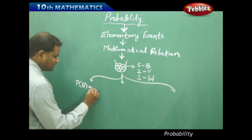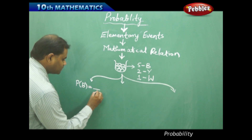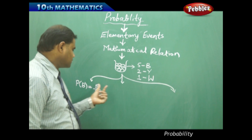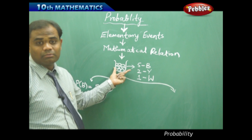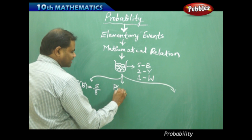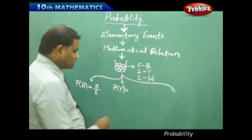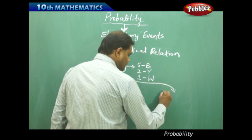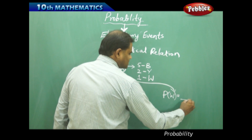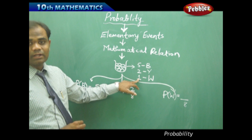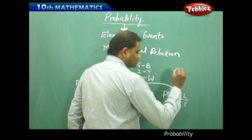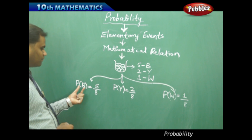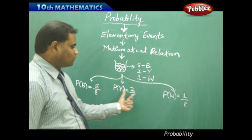The probability of picking a blue ball is five over eight, since there are five blue balls out of eight total. Similarly, the probability of picking a yellow ball is two over eight, as there are two yellow balls. The probability of picking a white ball is one over eight, since there is only one white ball. These three — picking a blue, yellow, or white ball — are each elementary events.